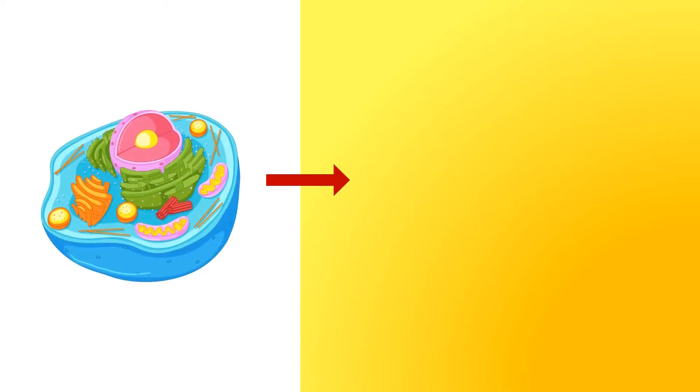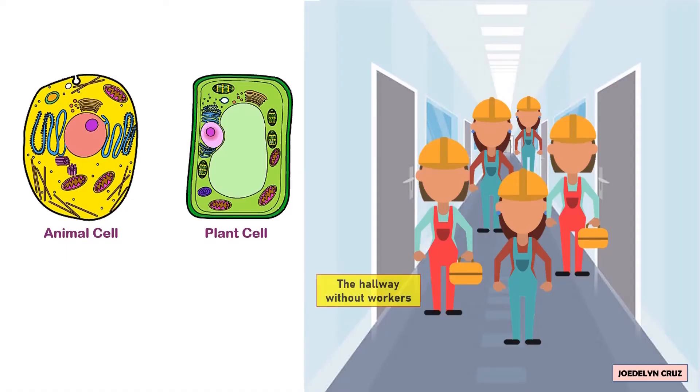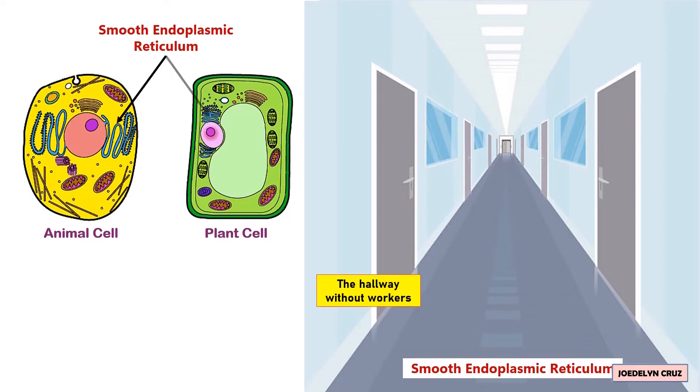In the cell as factory analogy, the hallway without workers represents the smooth endoplasmic reticulum.